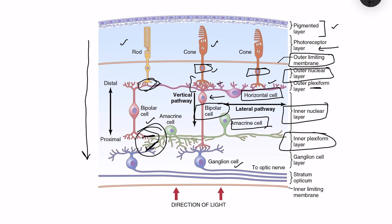Then there is the ganglion cell layer — the output neurons of the retina — whose axons form the optic nerve, and finally the inner limiting membrane. So between the three cell layers — outer nuclear layer, inner nuclear layer with bipolar cells, and ganglion cell layer — we have the plexiform layers where synapses occur.